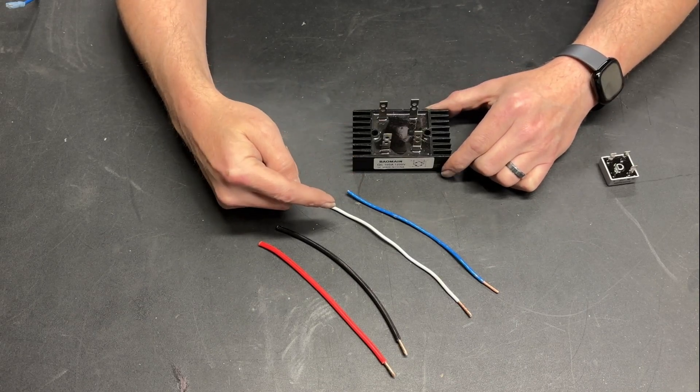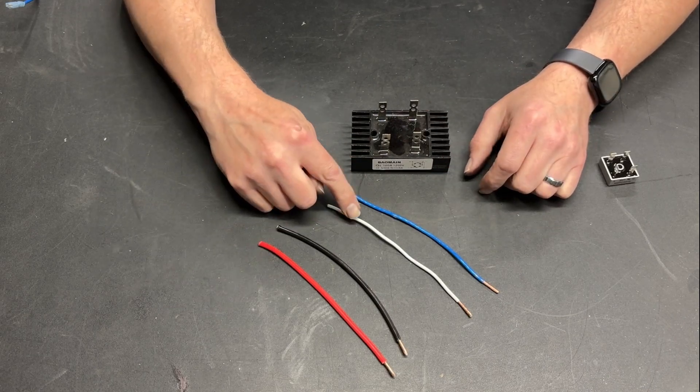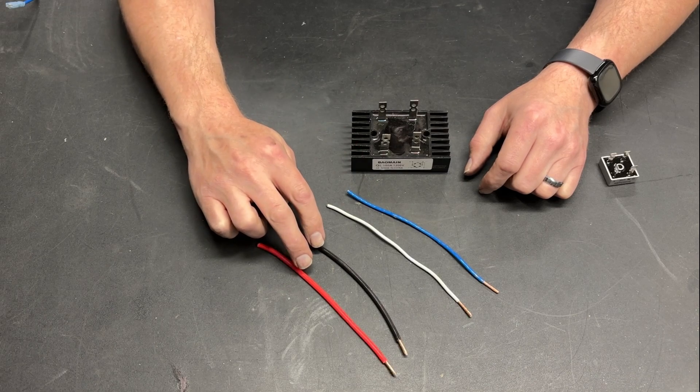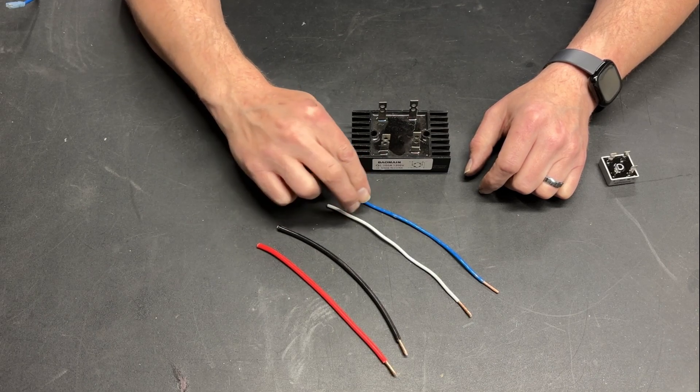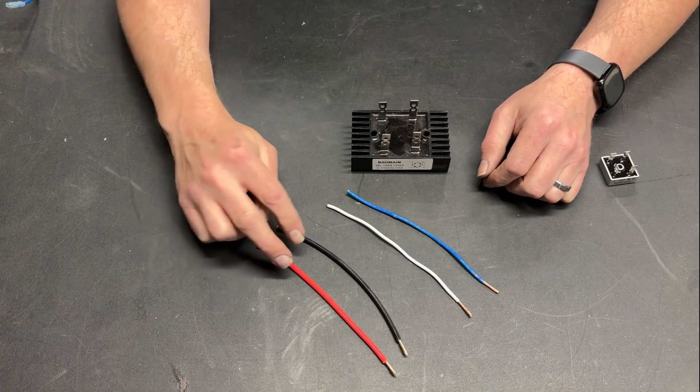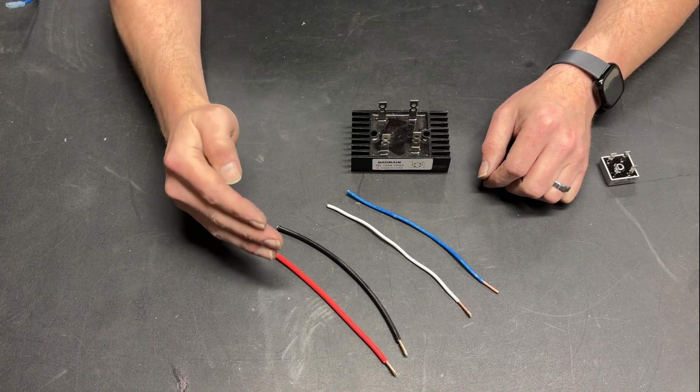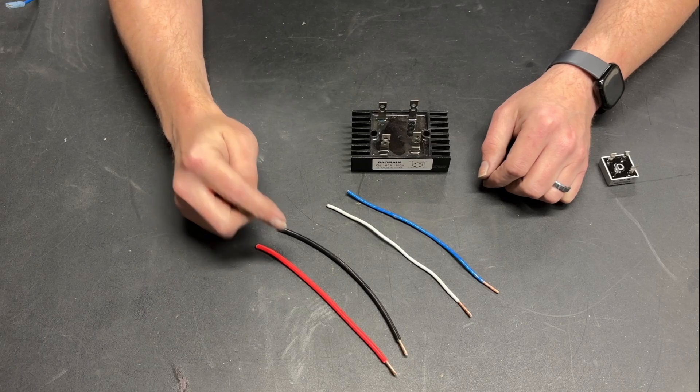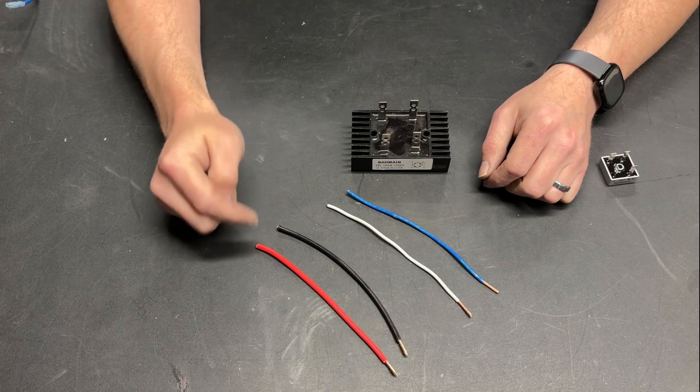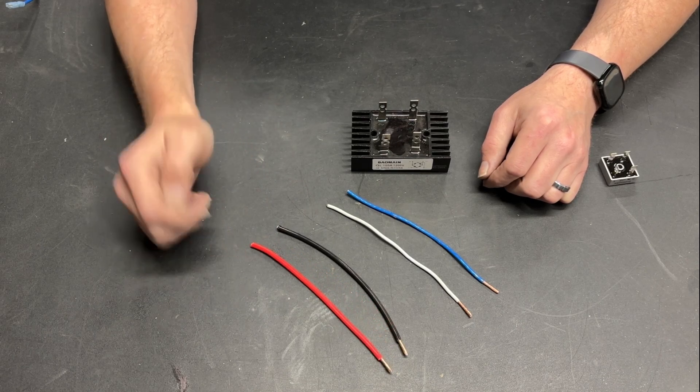AC doesn't require as big of gauge a wire as DC does for the same application. So you can get away with slightly smaller wires on the AC side, but you cannot skimp on the DC side. The alternating nature of AC current allows for smaller wires and less heat buildup. But on the DC side, because it's constant, bigger wires for reduced resistance and better electrical flow. My recommendation is 16 gauge is a minimum. 14 gauge is better, especially on the AC side. And for the DC side, this is actually 12 gauge. The bigger the wire, the better off you're going to be.